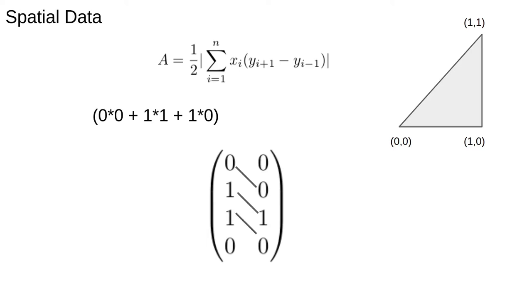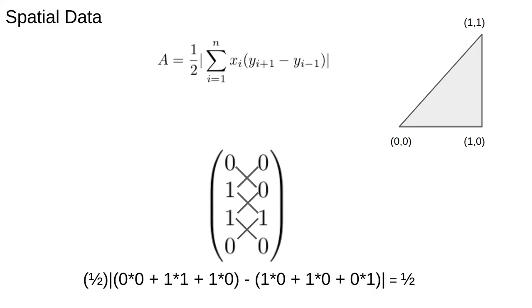We then multiply the terms connected by diagonal lines and add the results. We do the same with the other diagonals. Then we take the absolute value of half the difference. The answer is one half as it should be, and the crossing diagonals are supposed to look like shoelaces which give the formula its name.